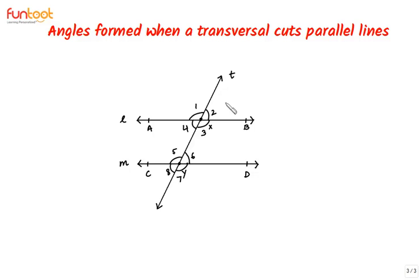We can see here that eight angles are formed: angle 1, angle 2, angle 3, angle 4, angle 5, angle 6, angle 7, and angle 8. At each intersection point we have four angles — around point X we have four angles and around point Y also we have four angles.